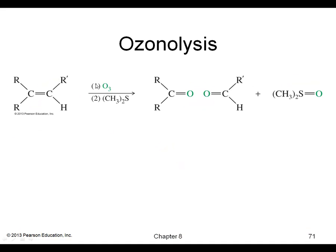Another reaction is ozonolysis, where we use ozone (O3) and dimethyl sulfide. In this reaction we cleave the double bond and put a carbonyl (C=O) on each side where the double bond was.